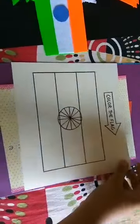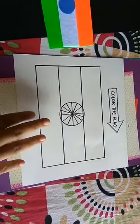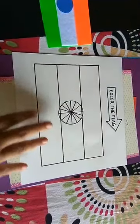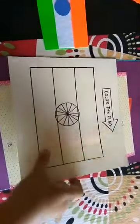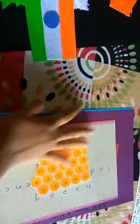The next activity here is coloring the flag. I have just drawn a simple outline of the flag, and then she has to use crayons, markers or paints, whatever she wants, and then she has to color in the flag. So this is the first activity.